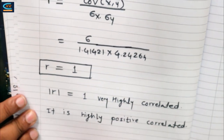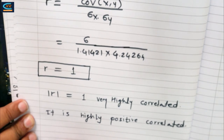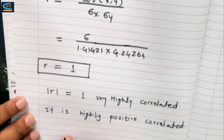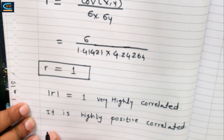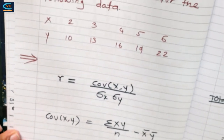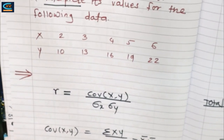So this is the correlation coefficient calculation. In the next video we will see how to find out the missing terms in the given bivariate data. Thank you.